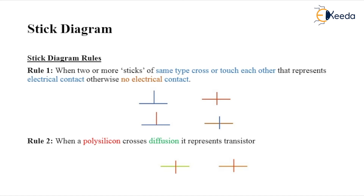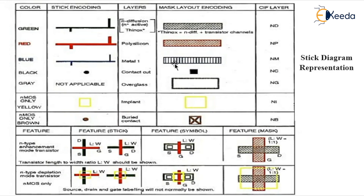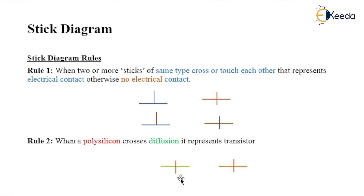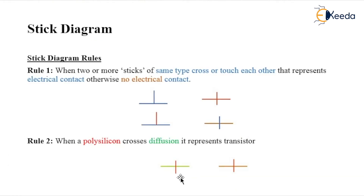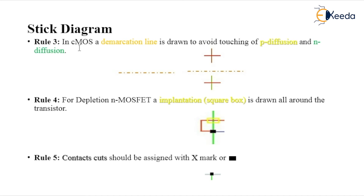Rule 2: When polysilicon crosses diffusion, it represents a transistor. Polysilicon (red) crossing n-diffusion (green) represents an n-type transistor. When this polysilicon crosses this green bar (n-diffusion), it is considered a transistor.